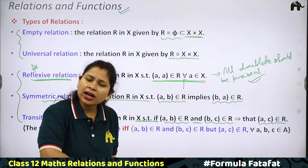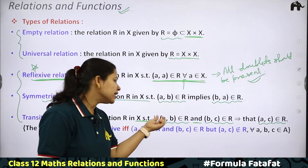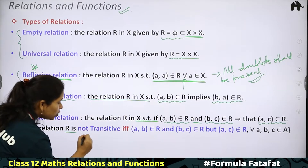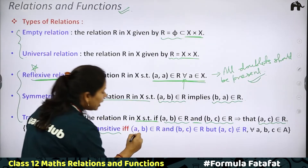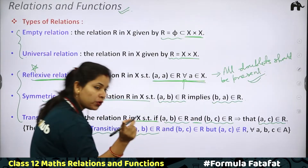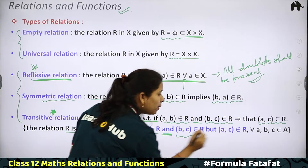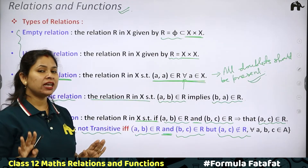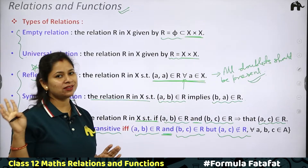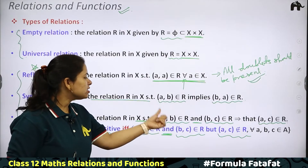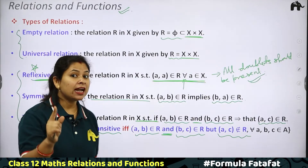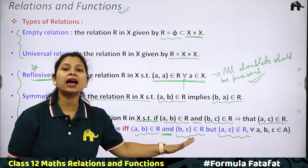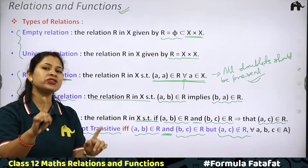We don't say the relation is failing the transitive condition unless we can find a counterexample. The relation R is NOT transitive if and only if (A, B) belongs to R and (B, C) belongs to R, but (A, C) does not belong to R, for some A, B, C belonging to the set. Then the relation is not transitive. Otherwise, the relation is always transitive. If you remember it this way — the negative condition — you will never be confused.